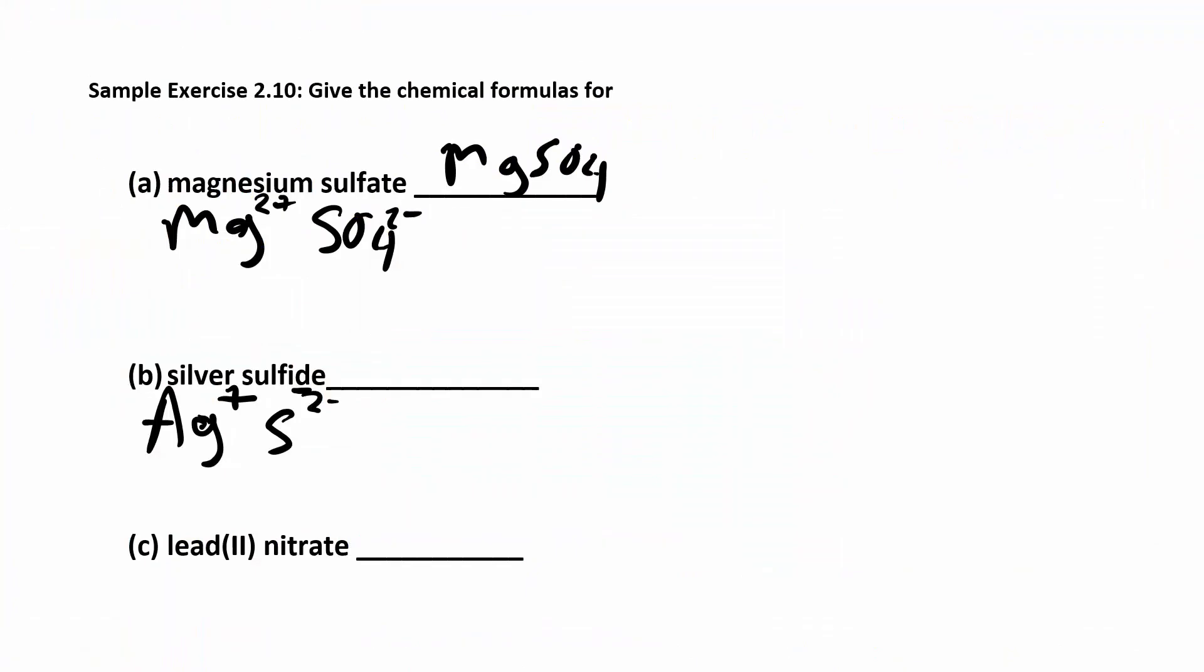And then lead two. Notice the Roman numeral 2 is telling you that you have Pb 2+ and then nitrate is minus. Again, nitrate is the polyatomic ion, you have to memorize that from the chart. So when you put all these together, you get Pb(NO3)2. And that is how we name ionic compounds.